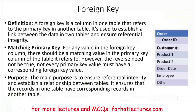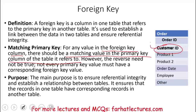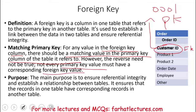Now let's talk about the foreign key. A foreign key is a column in one table that refers to the primary key in another table. The customer ID in the order table is a foreign key. So the primary key becomes a foreign key in the order table. For any value in the foreign key column, there should be a matching value in the primary key column of the table it refers to. The customer ID refers to 0001 — it's a primary key somewhere else, but a foreign key here. However, the reverse need not be true: not every primary key value must have a corresponding foreign key value. The main purpose is to ensure referential integrity and establish a relationship between tables in a relational database.